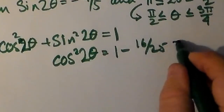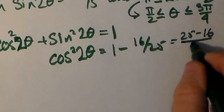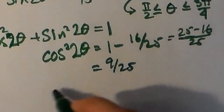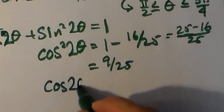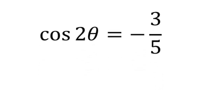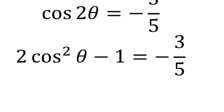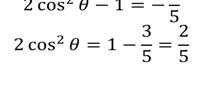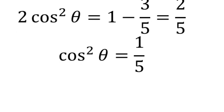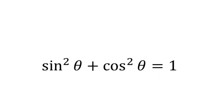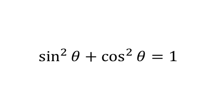We already know sin 2θ, so we take negative 4/5 and square it to get 16/25. Finding cos²2θ is a matter of subtracting 16/25 from 1, giving 9/25. The Pythagorean identity is applied multiple times. Cos 2θ is negative 3/5. We then work that out in one of the double angle formula identities, and we end up with cosθ equals 1/√5, or negative √5/5, because we're in quadrant 2.